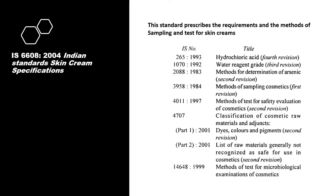This slide represents the revision history of the different guidelines. I want to specifically mention Indian Standard 4707, which contains the classification of cosmetics raw materials and adjuncts. It is divided into two parts: Part 1 specifically includes dyes, colors, and pigments, and Part 2 contains the list of raw materials generally not recognized as safe for use in cosmetics.